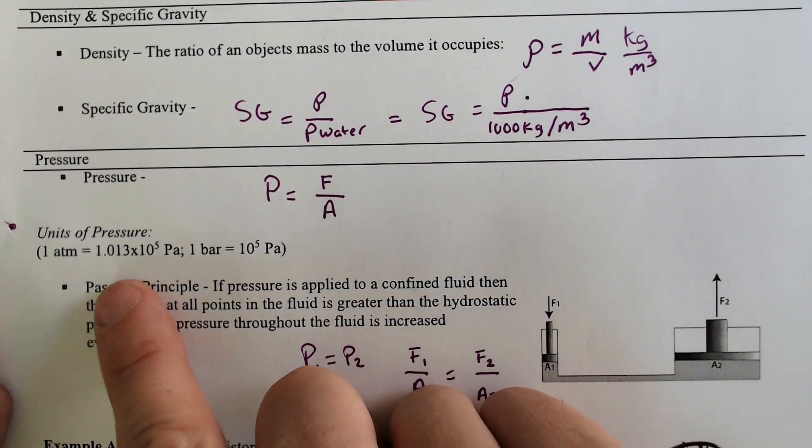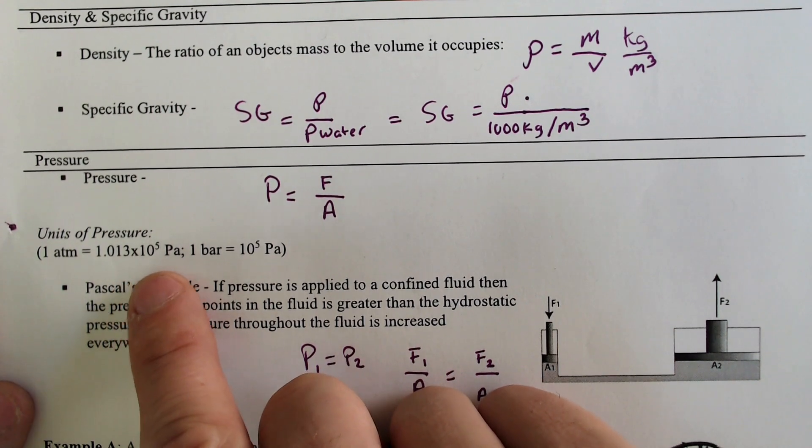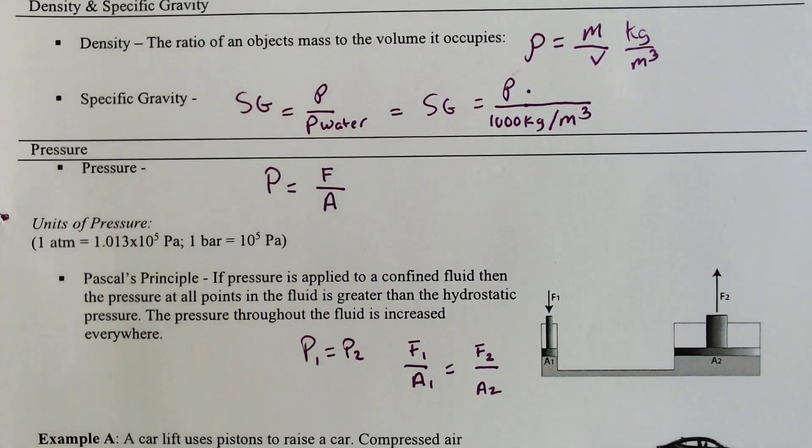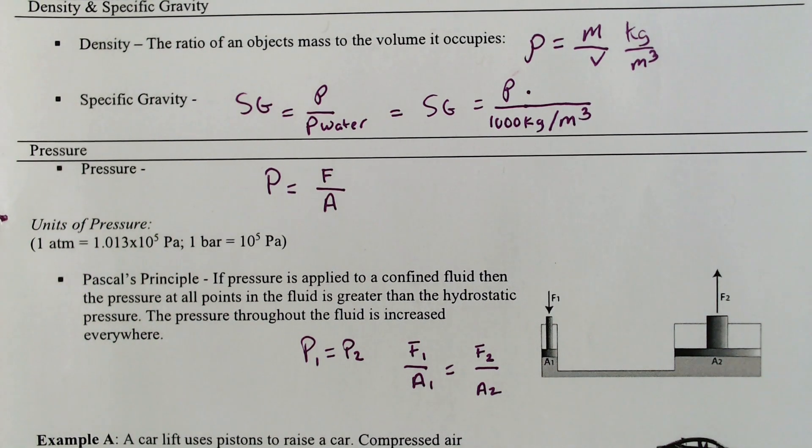One atmospheric pressure is 1.013 times 10 to the fifth pascals. That is how much pressure per square meter you're feeling over your skin just by the weight of the atmosphere pushing down on you.